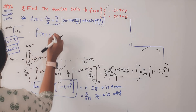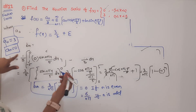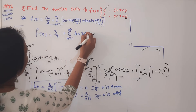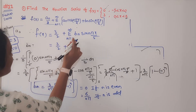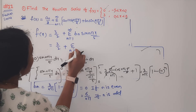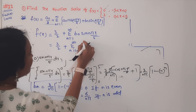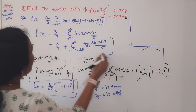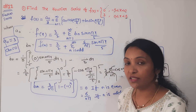Therefore, f(x) = A₀/2 + summation of Bₙ sin(nπx/5), where the sum is over n = 1 to infinity for odd n only. Substituting A₀ = 3 and Bₙ = 6/(nπ): f(x) = 3/2 + summation over odd n of [6/(nπ)] sin(nπx/5). This is the final Fourier series of the given function.